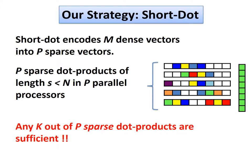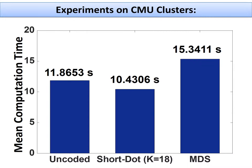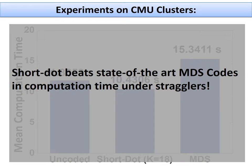Our strategy, ShortDot, encodes m dense vectors into p sparse vectors of length n such that any k out of these p sparse dot products are sufficient to compute. We provide a theoretical analysis of our strategy and also derive fundamental bounds of any such strategy. A theoretical analysis of expected computation time shows that ShortDot outperforms repetition, MDS coding, and uncoded parallel processing in computation time under stragglers. We also perform experiments on CMU clusters and observe that ShortDot beats state of the art MDS codes in computation time under stragglers.